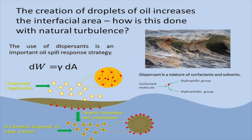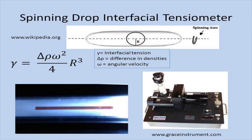This is how you measure interfacial tension. You put a little oil droplet in water inside a capillary and spin it. This is the angular velocity at which you spin it. As you spin it, the drop elongates all the way into a cylinder shape, which has a radius. The smaller the radius, the smaller the interfacial tension. That's just the way you measure it.